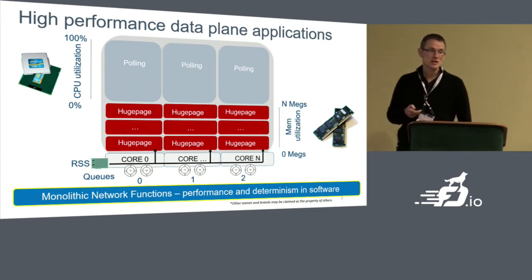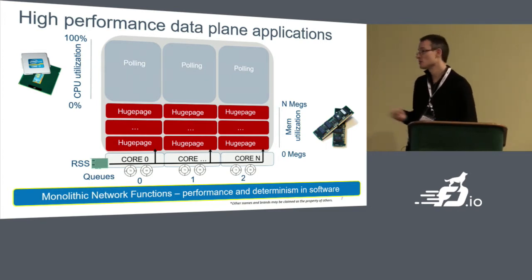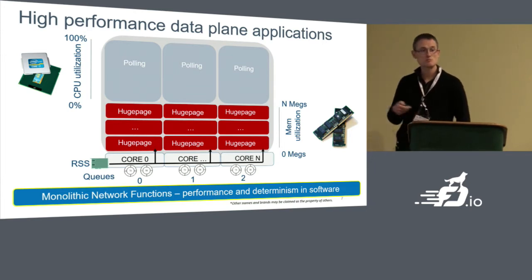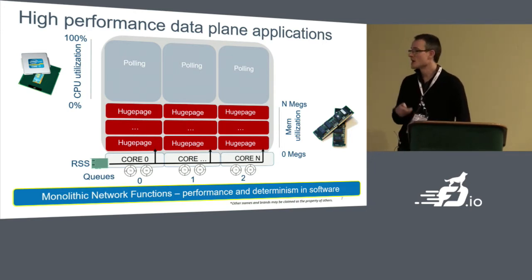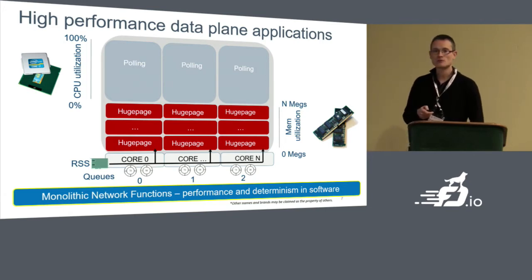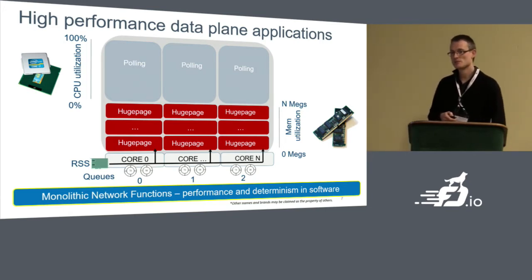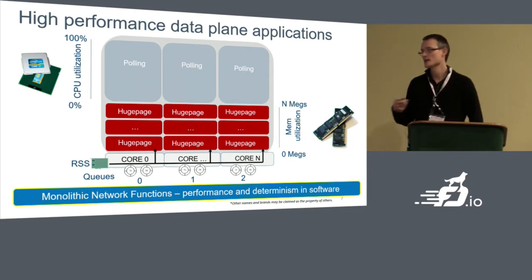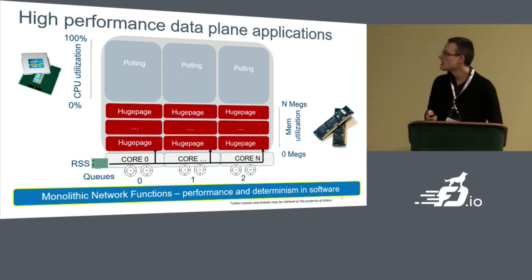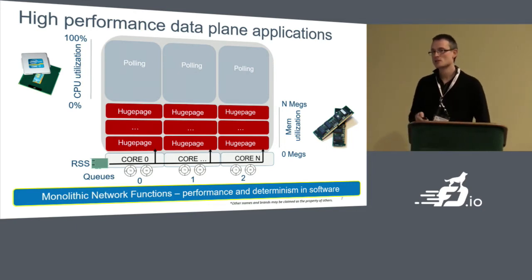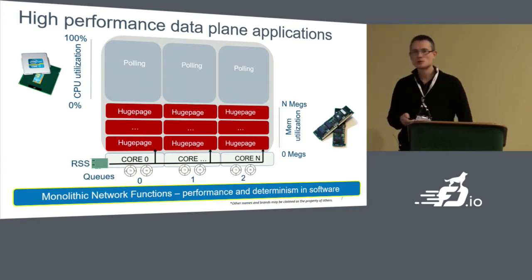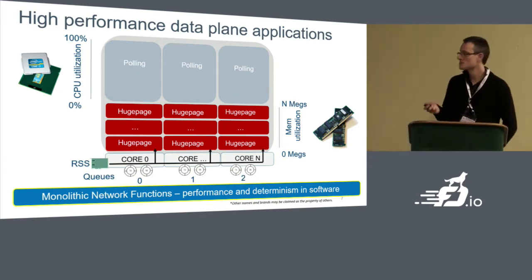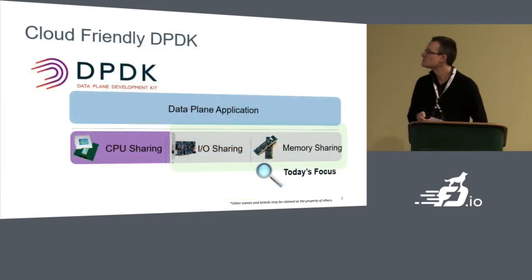But times have changed. We're no longer being deployed in discrete appliances — we moved into VNFs and had to work very hard to offer the same kind of determinism. Now, as we move towards cloud-native models, we have to find ways to offer the same level of performance but to do a little bit better on sharing.